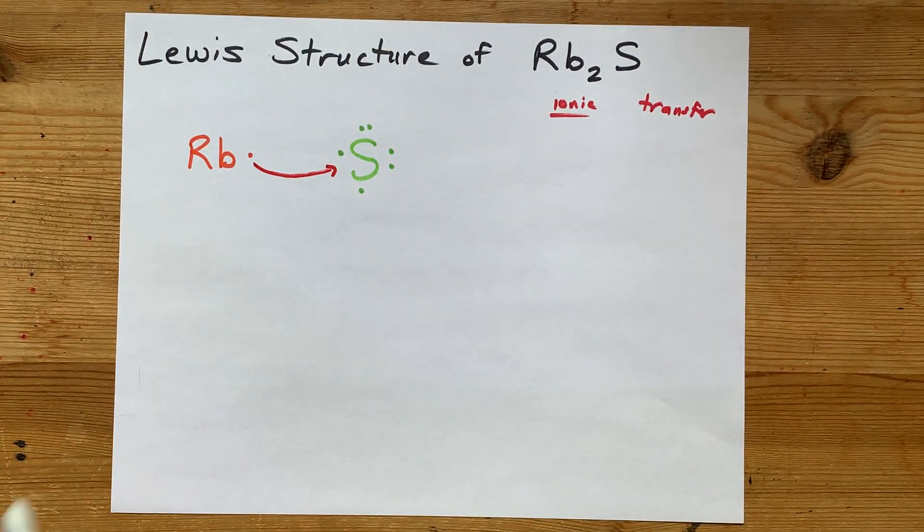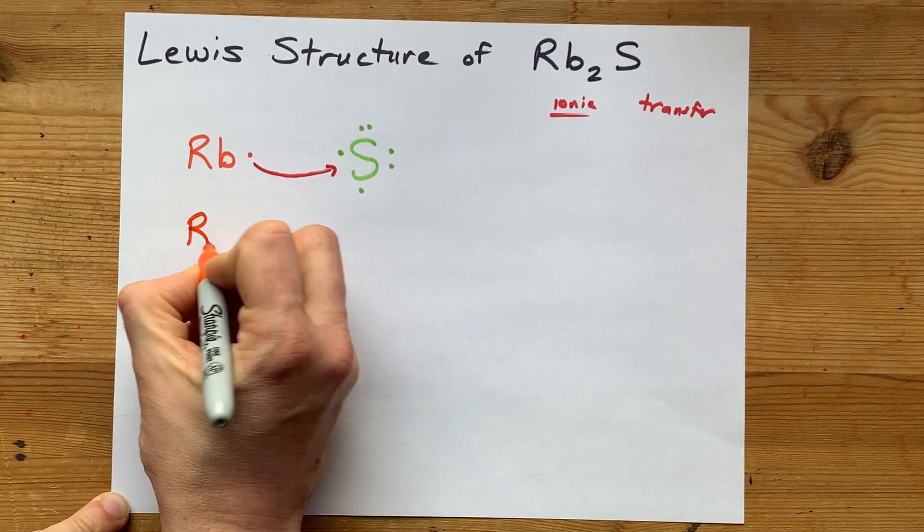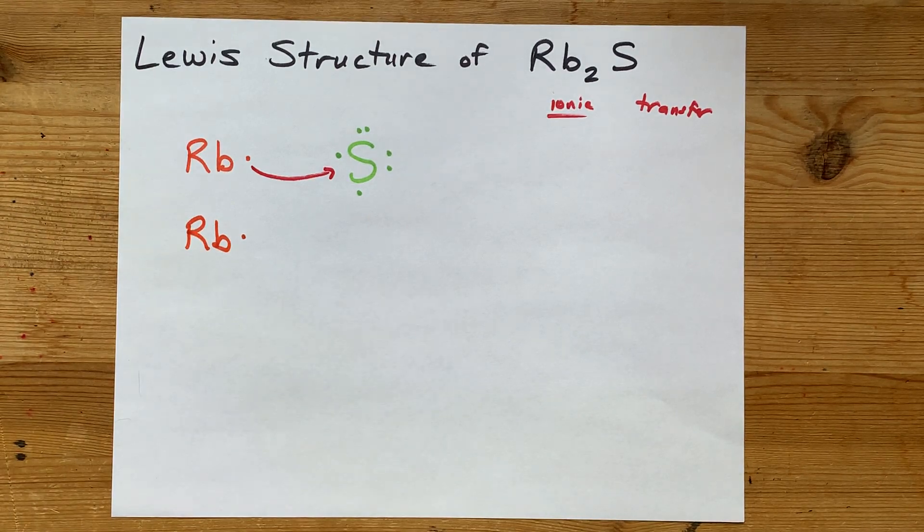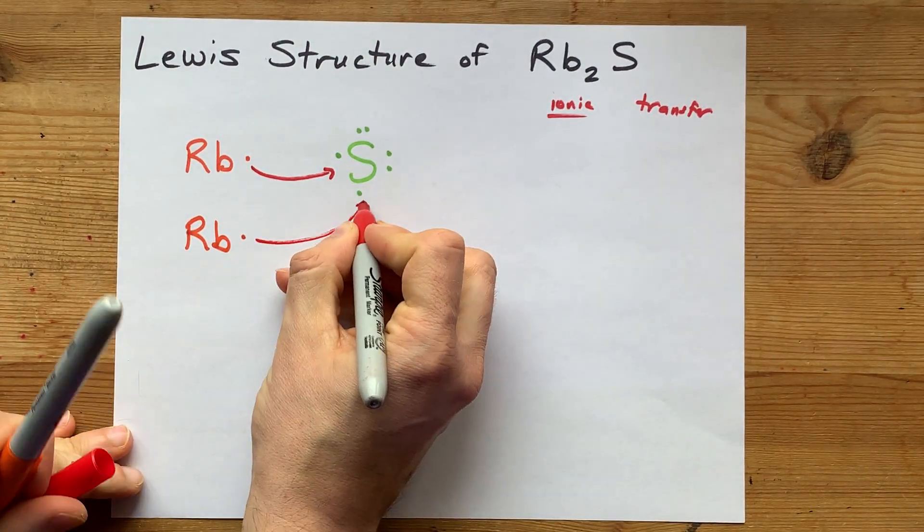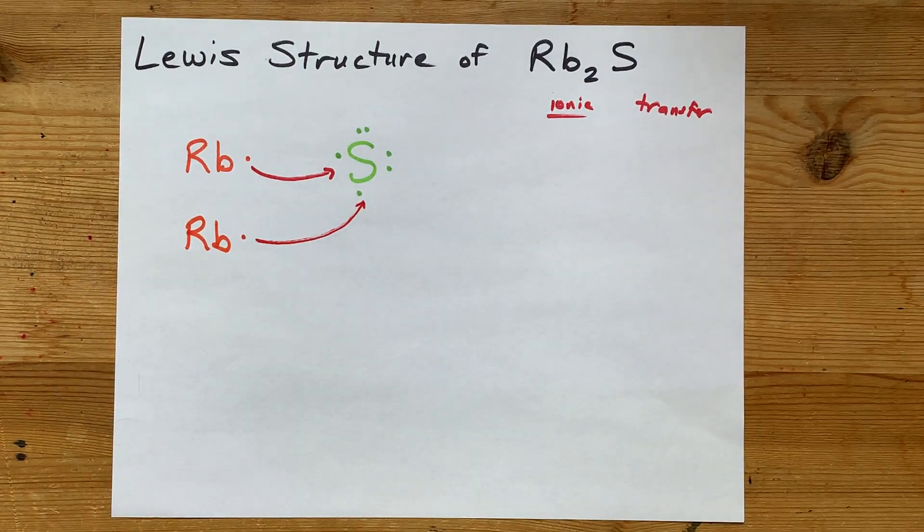Where is sulfur going to get an 8th electron from? This is where you use your magic and just appear another rubidium here. That rubidium gives its electron away to sulfur. And now sulfur has 8 electrons total.